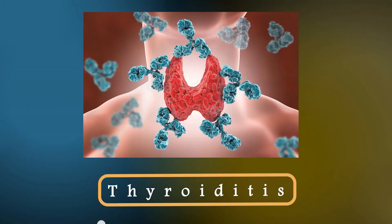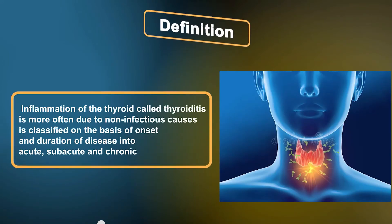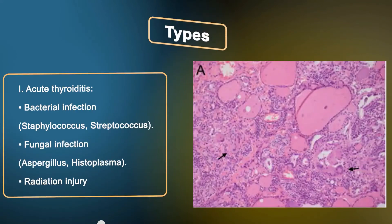Thyroiditis is defined as inflammation of the thyroid gland, more often due to non-infectious causes. It is classified on the basis of onset and duration of disease into acute, subacute, and chronic types. Acute thyroiditis is caused by bacterial infections such as staphylococcus and streptococcus, fungal infections such as aspergillus and histoplasma, or radiation injury.